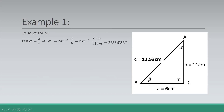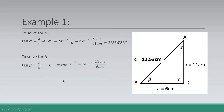To solve for beta, we can also use the tangent function, which is equal to B over A. The side opposite to beta is side B and the side adjacent to it is side A. By computing the inverse tangent of B over A — that is the inverse tangent of 11 over 6 — that gives us 61 degrees 23 minutes and 22 seconds.